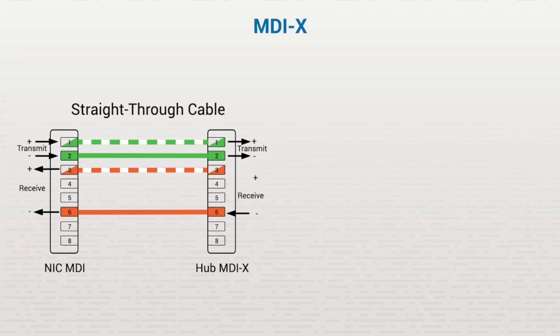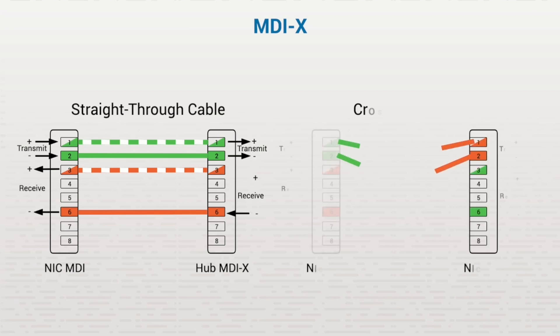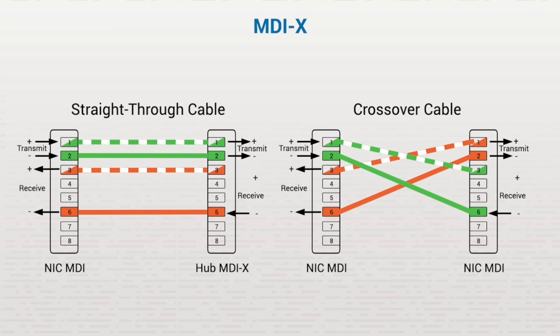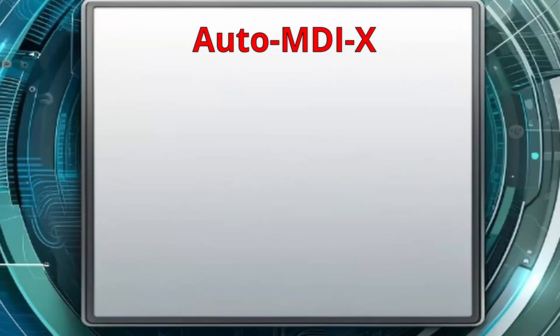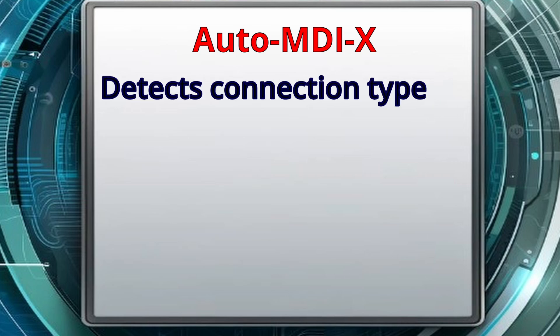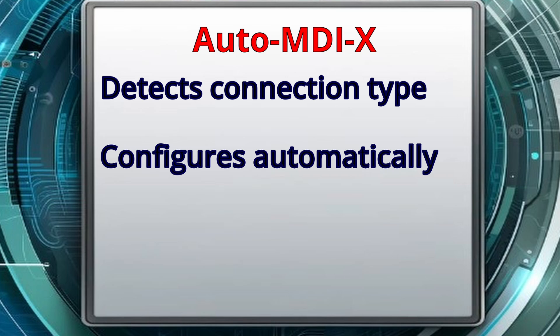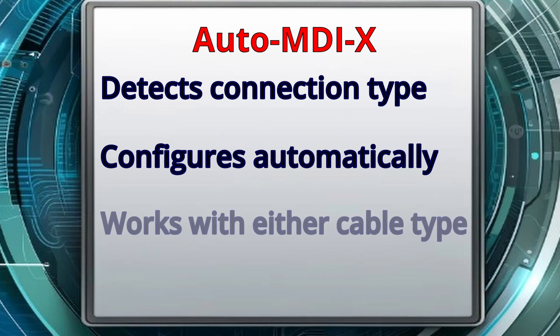PCs usually have MDI ports and switches and hubs usually have MDI-X ports. If you have devices with the same interface type on both ports, you can use a crossover cable to connect the transmission and receiving pins. Auto-MDI-X was developed to make these connections easier by detecting the needed cable connection type and automatically configuring the connection. When Auto-MDI-X is enabled on either end of a link, the transmission works with either straight-through or crossover cables. Be sure to also set the interface speed and duplex to Auto for Auto-MDI-X to work properly.